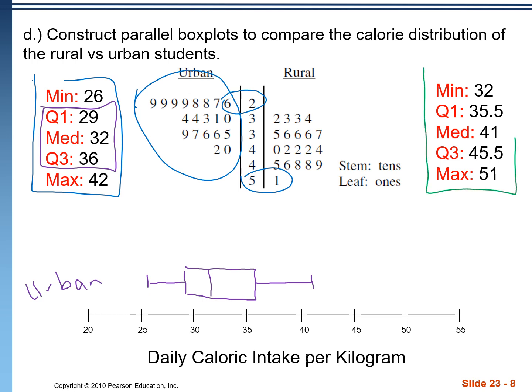And then the same thing with the rural one. This is going from 35.5 to 45.5, median at 41, whisker down to 32 and up to 51. If we look at those just at a glance, we can see that rural students are consuming more calories on average. Now, that question had just asked me to make parallel boxplots and not a modified boxplot. A modified boxplot would include any outliers.